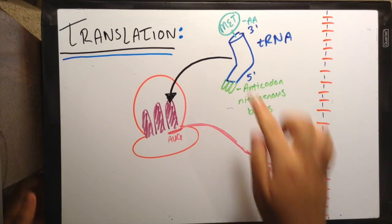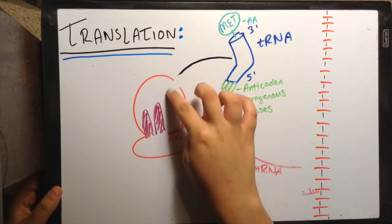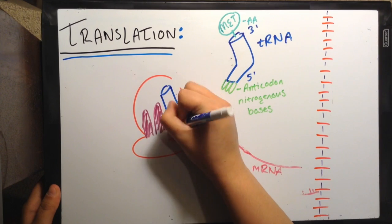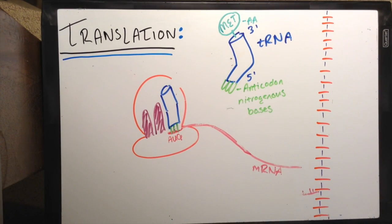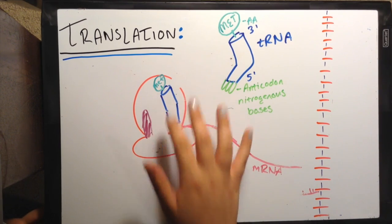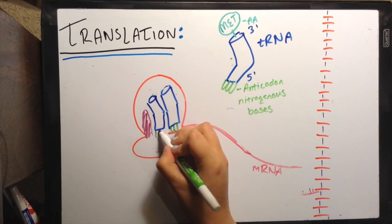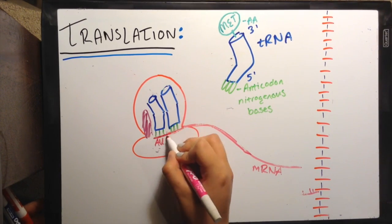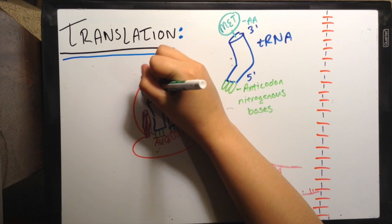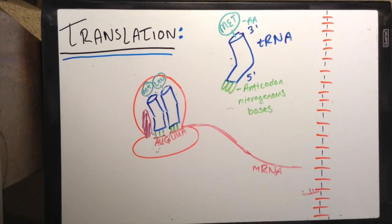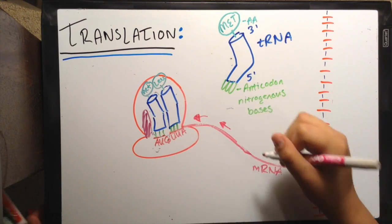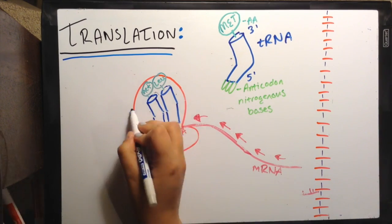Then the ribosome will read the mRNA 3 nitrogenous bases at a time. This is called a triplet codon. The ribosome finds the matching tRNA with the 3 bases called the anticodon that matches this codon. This tRNA brings with it whatever amino acid is also attached to the other end of the structure. The mRNA keeps sliding along with the ribosome, and with each codon read, the new amino acid is connected with the previous amino acid and starts a polypeptide chain, which is the start of a protein.